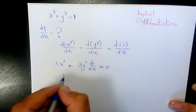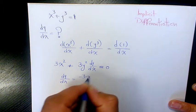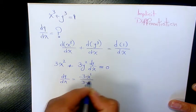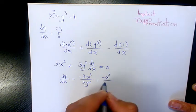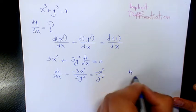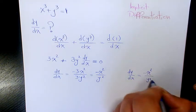That's going to be dy/dx equals to negative 3x² over 3y². These two cancel out and we have negative x² over y². So basically that's going to be the derivative of this expression.